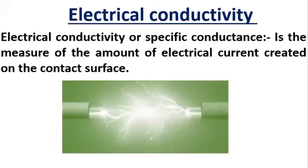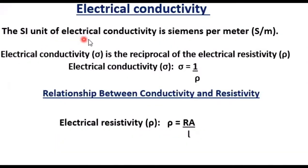Electrical conductivity or specific conductance is the measure of the amount of electrical currents created on the contact surface. The SI unit of electrical conductivity is siemens per meter.